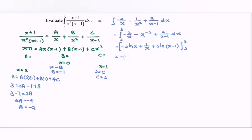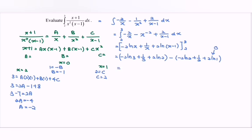Substituting the limits: we have (-2 ln 3 + 1/3 + 2 ln 2) minus (-2 ln 2 + 1/2 + 2 ln 1). Since ln 1 = 0, that term gives zero. Rewriting: -2 ln 3 + 4 ln 2 + 1/3 - 1/2.